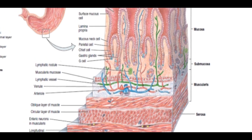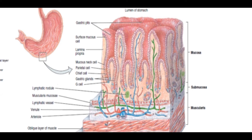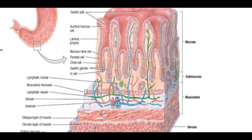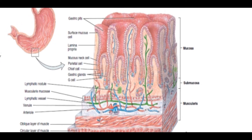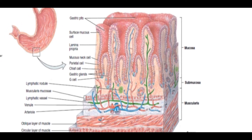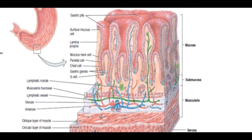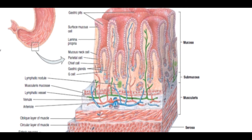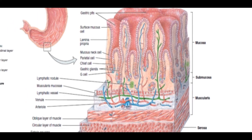The mucosa of the stomach consists of various cells which secrete various secretions. The mucus neck cell and the surface mucus cell produce mucus. The parietal cells produce hydrochloric acid. The chief cells produce pepsinogen and gastric lipase. The G cells produce gastrin.